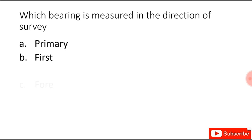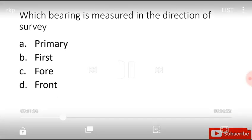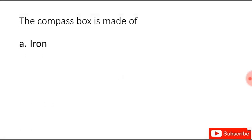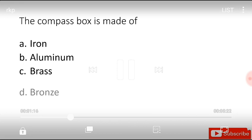Primary, first, fore, or front, and the answer is fore bearing. The compass box is made of iron, aluminum, brass, or bronze, and the answer is brass. Open traverse is suitable in the survey of ponds, rivers, estates, or none of them, and the answer is rivers.